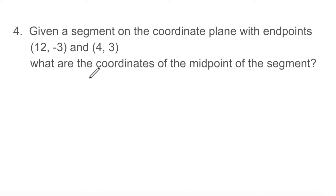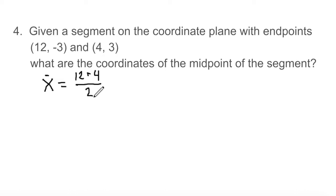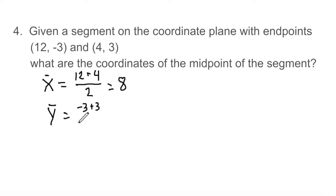Here's another one: we're given two endpoints and have to find the midpoint. The x average is 12 plus 4 divided by 2, which is 16 divided by 2, so that's 8. The y average is negative 3 plus 3 divided by 2 — negative 3 and positive 3 add up to 0, so 0 divided by 2 is 0. The midpoint is at (8,0).